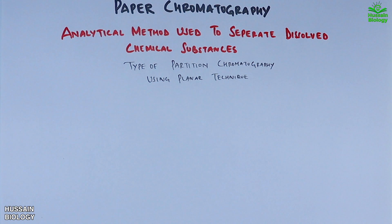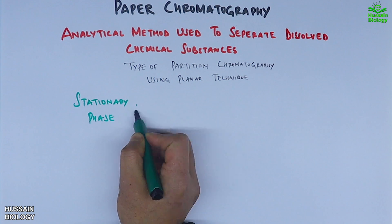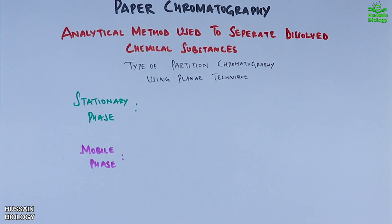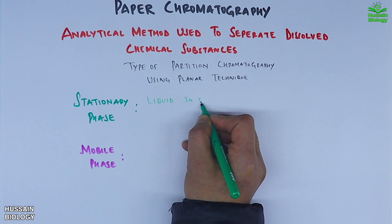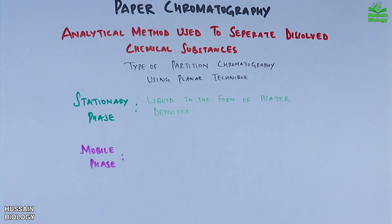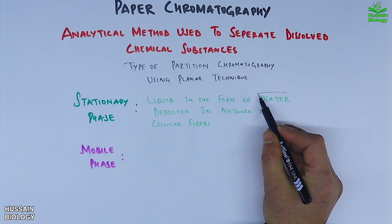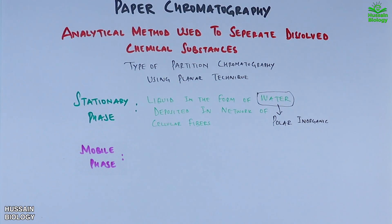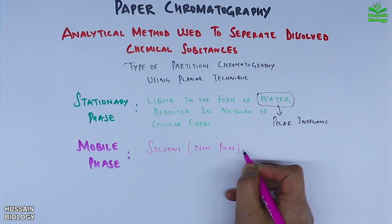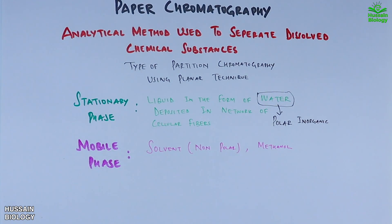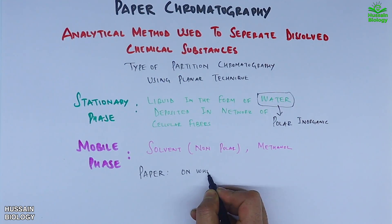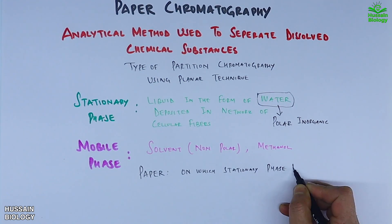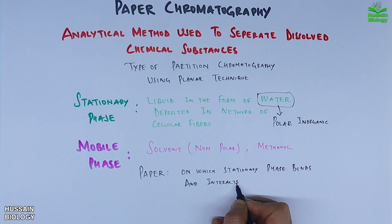To understand paper chromatography we have two important terms to remember: stationary phase and mobile phase. The stationary phase is the liquid in the form of water deposited in the network of cellular fibers of filter paper. It must be noted that water is a polar inorganic molecule. The mobile phase is a non-polar solvent like methanol. We also have a paper on which the stationary phase binds and interacts.